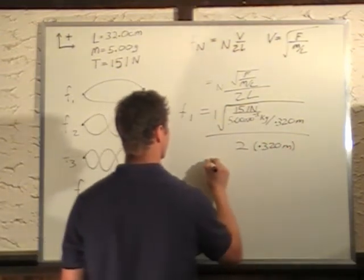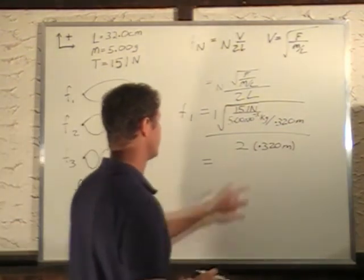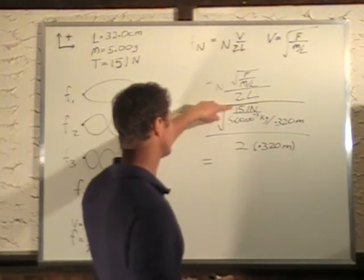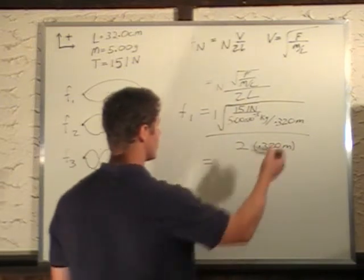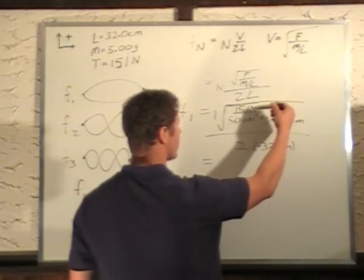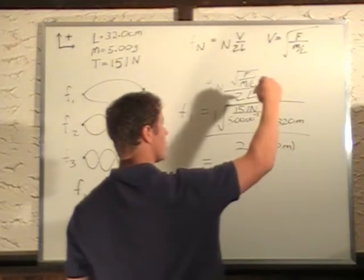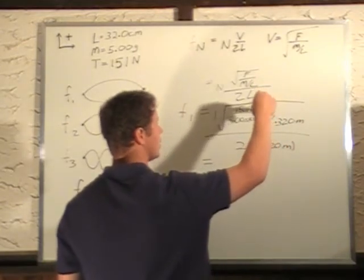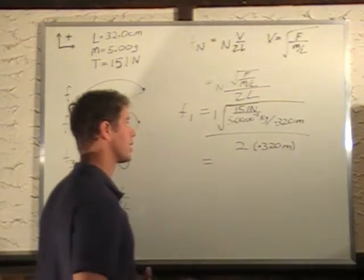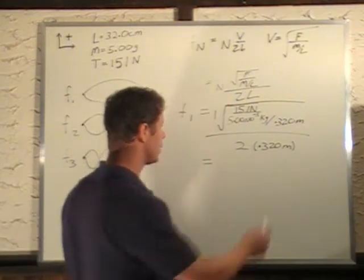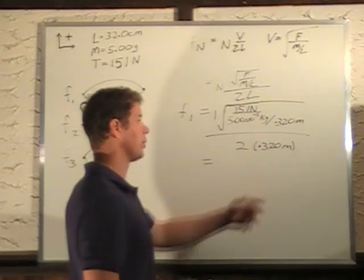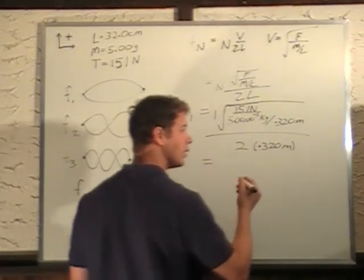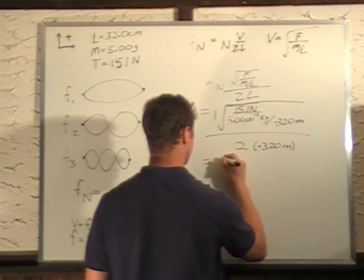That's all divided by 2 times the length of 0.32 meters. Okay, so we plug that into our calculator, basically, we divide these two, and then divide that into 151 newtons, take the square root, divide by this. Newton is a kilogram meter per second squared, so this meter goes to the top, so we have a kilogram meter square per second squared. Kilograms cancel, meter square per second squared, take the square root meters per second, this meter cancels at the top meter, we're left with 1 over seconds, which is hertz. Multiplying all this stuff through, we get 153.6 hertz.